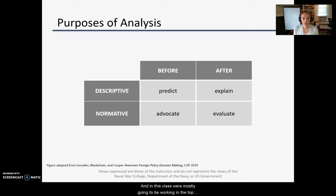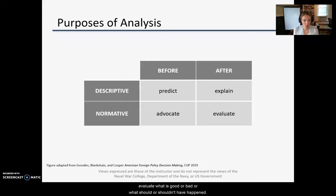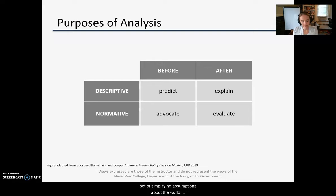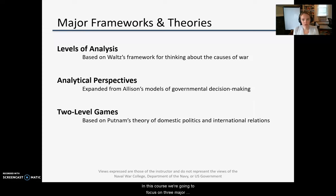In this class we're mostly going to be working in the top line of this table — we're going to predict and explain things that happen in the world rather than trying to evaluate what is good or bad or what should or shouldn't have happened. To do this type of analysis we often use models or frameworks, meaning a set of simplifying assumptions about the world that let us focus on particular aspects of a case or a policy. In this course we're going to focus on three major frameworks or sets of theories.